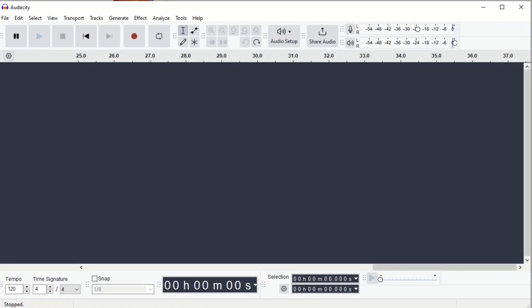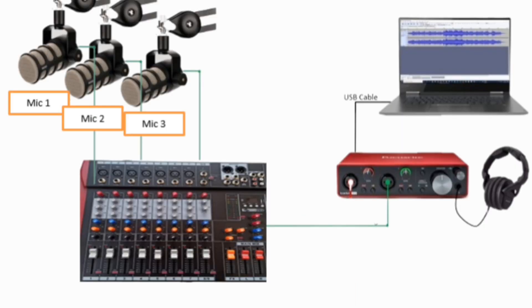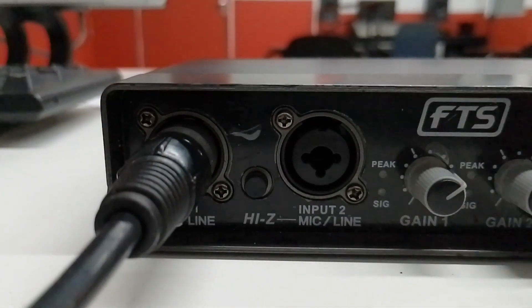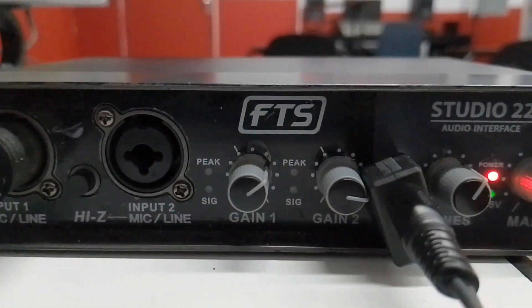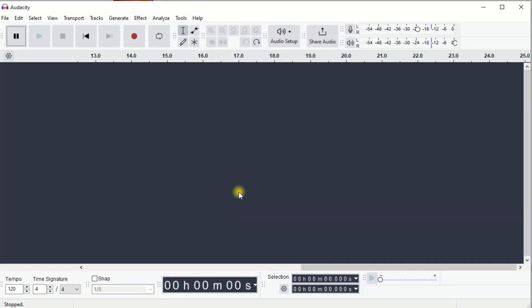How to set up your audio interface in Audacity for recording your audio podcasts. First, ensure that you connect your audio interface to the computer before you open the program. It doesn't matter whether you're using this setup or this setup for your podcast. I have an FTS Studio 22 audio interface and my microphone is connected to input number one.